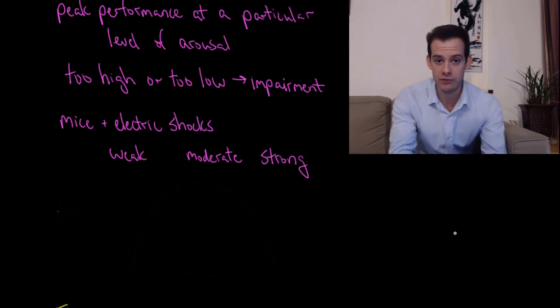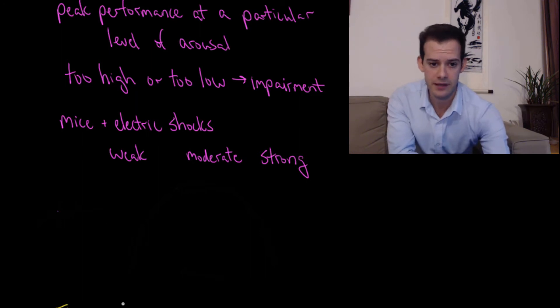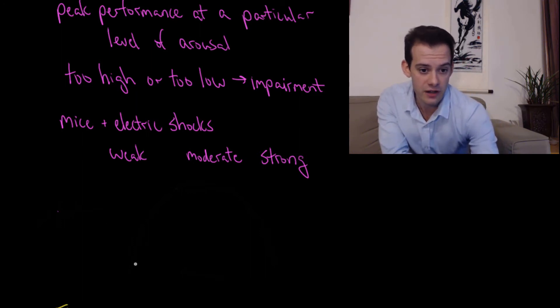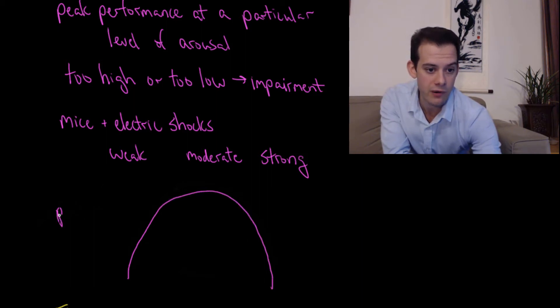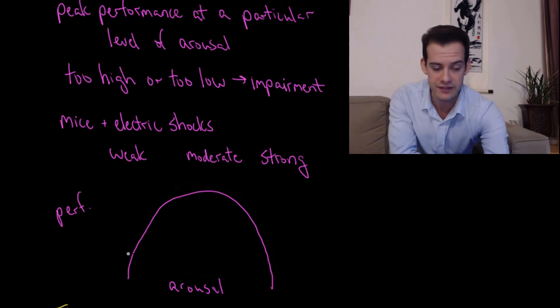Now rather than thinking about giving yourself electric shocks, you might think about your own performance on something like an exam. The idea of the Yerkes-Dodson Law is that we'll have this inverted U-shaped curve, where we're looking at our performance here on the y-axis and our level of arousal here on the x-axis. So the idea is that if you're taking an exam and your arousal is very low, you're falling asleep, you're not going to do your best on the test.